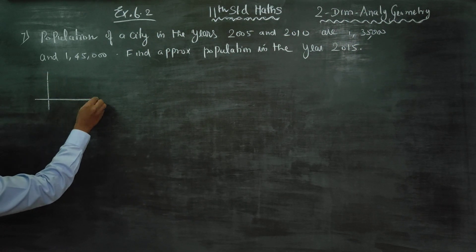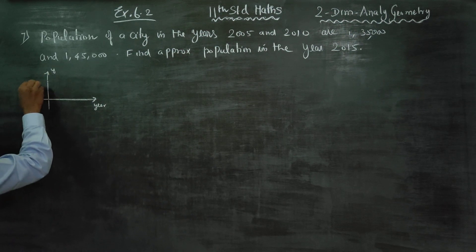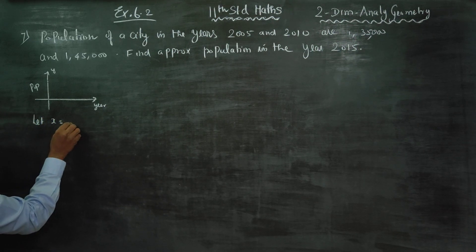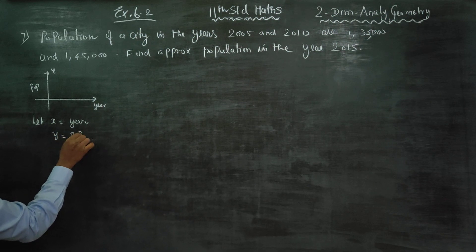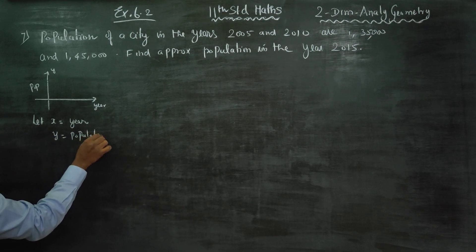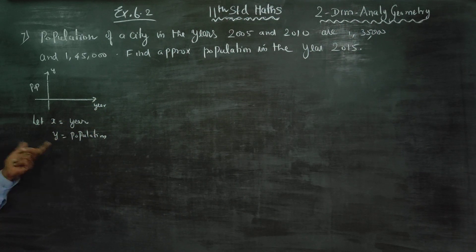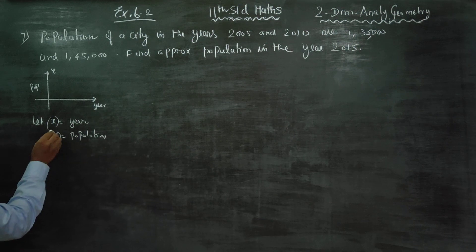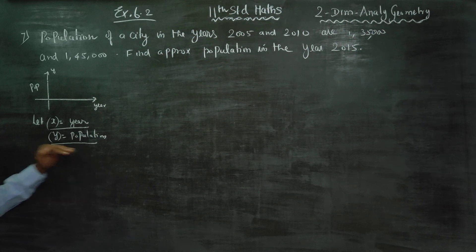Let x be equal to the year and y be equal to the population. The x-coordinate represents the year and the y-coordinate represents the population.